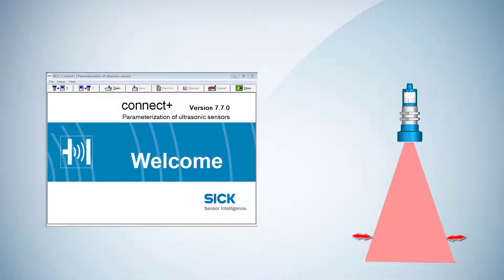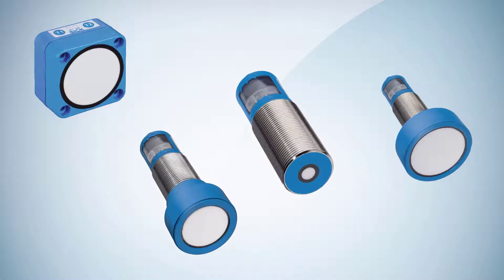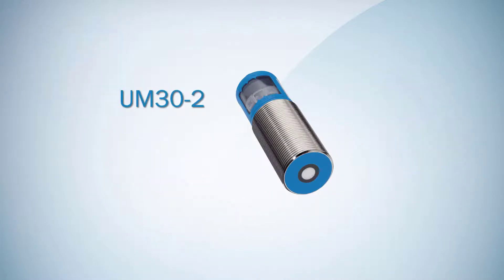The sound cone can be widened or narrowed. The variable sound cone adjustment is available for several SICK ultrasonic sensors. In this video we use the UM30 as an example.